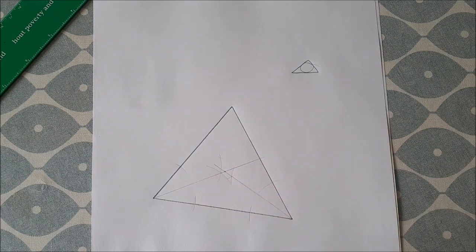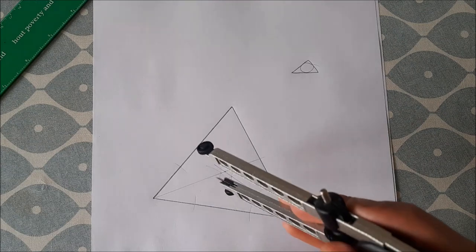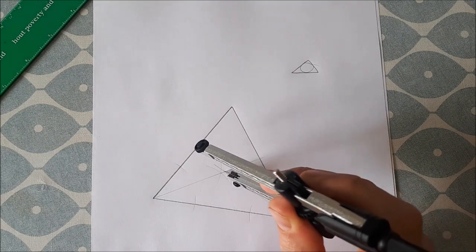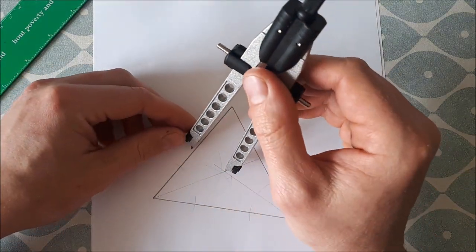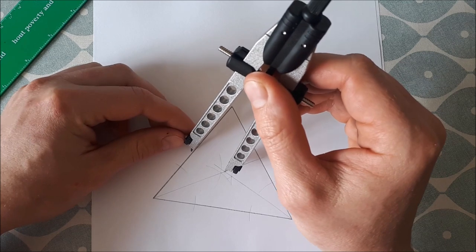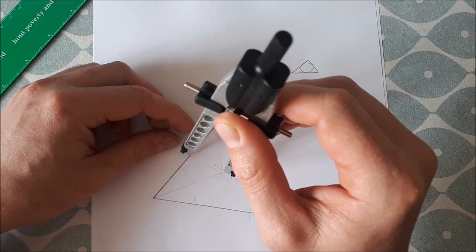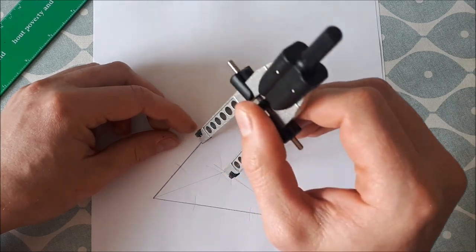So that there is our incenter. Now to draw our incircle, you put the point of your compass at that point there and you want to get the perpendicular distance to one of the sides. You move your compass in so that it's just about touching one of the sides there.